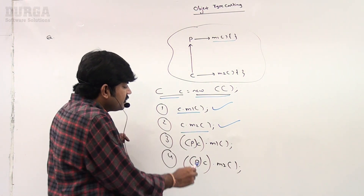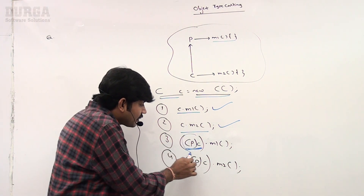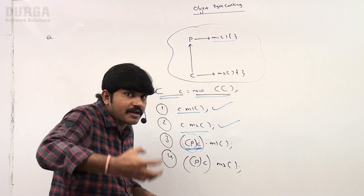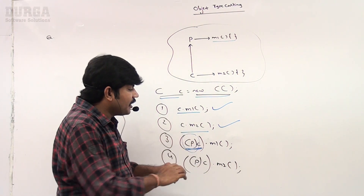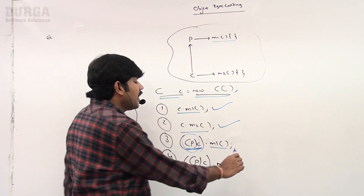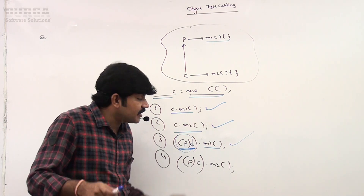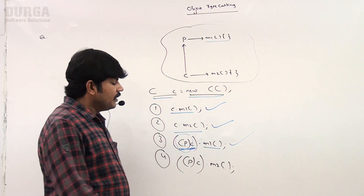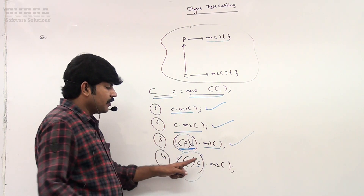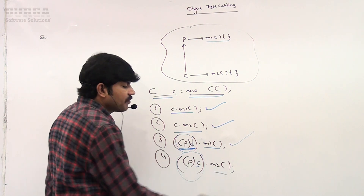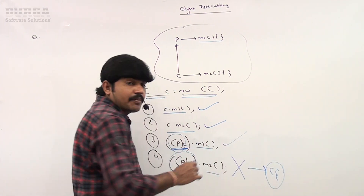Next, this C is being typecast to P type. Whenever we typecast to P type, the type becomes parent type, but the internal object is still child type. On the parent type, the method available in the parent class you can happily call — no problem. But on the parent type, child-specific methods you cannot call; you will immediately get a compile error.